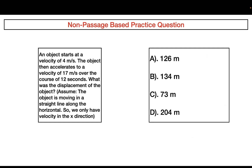The first question: an object starts at a velocity of four meters per second and accelerates to a velocity of 17 meters per second over the course of 12 seconds. What was the displacement of the object? Assume the object is moving in a straight line along the horizontal, so we only have velocity in the x direction. Take a moment, pause the video, and choose which answer is correct.